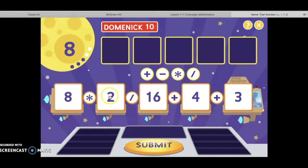So eight times two is sixteen. Then I have to divide. So I had sixteen divided by sixteen, that's one. Then I have to do my addition. One plus four is five, plus three should be eight. Let's see. Bingo, we did it.